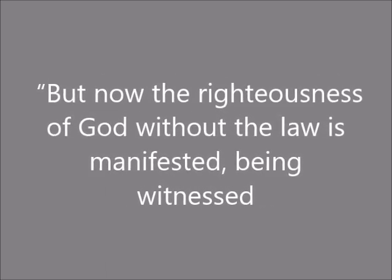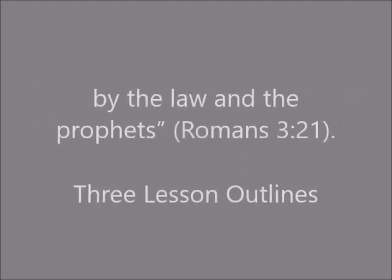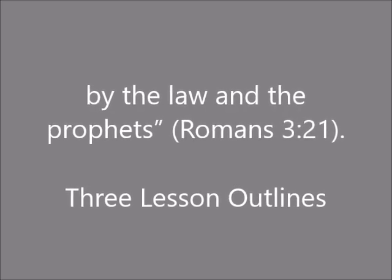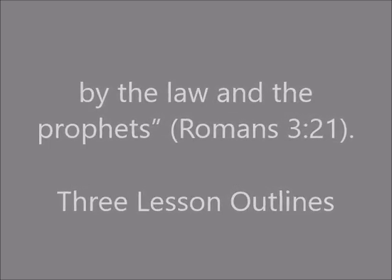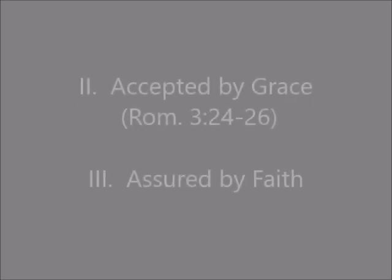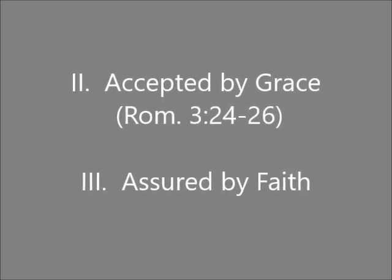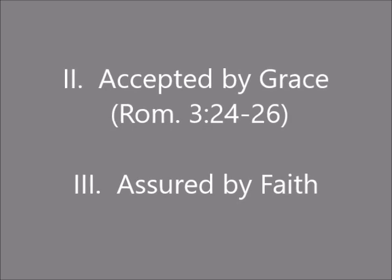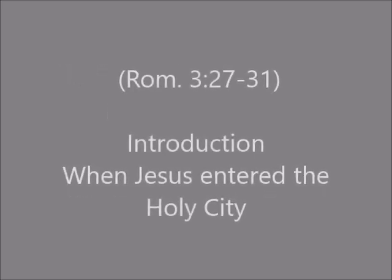Golden text: "But now the righteousness of God without the law is manifested, being witnessed by the law and the prophets." Romans 3:21. Today we have three lesson outlines. The first is Alienated by Sin, coming from Romans 3:21-23. The second is Accepted by Grace, Romans 3:24-26. And the third is Assured by Faith, Romans 3:27-31.